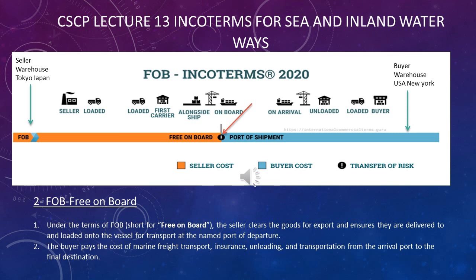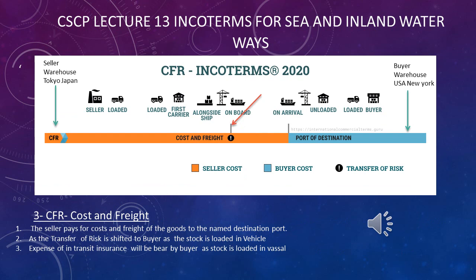The seller loads the stock into the vessel. Look at the red line — once the stock is loaded into the vessel, the responsibility shifts to the buyer. The buyer is then responsible for sea shipment cost, transit insurance cost, offloading at the port, import documentation and expenses, and shipping the stock from the port to its own warehouse via vehicles.